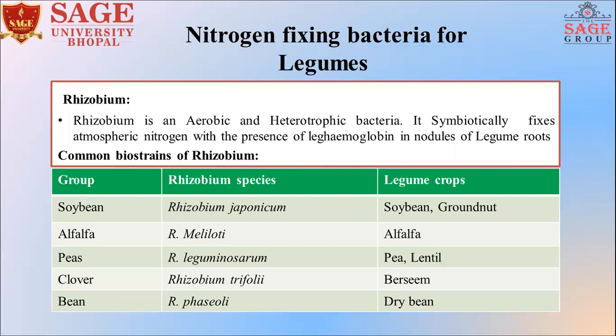Nitrogen-fixing bacteria for legumes — the first one is Rhizobium. Rhizobium is an associative bacteria. They live in the roots of legumes. They can fix nitrogen from the atmosphere and take energy from the root. They help the crop and also provide beneficial hormones to the crop.